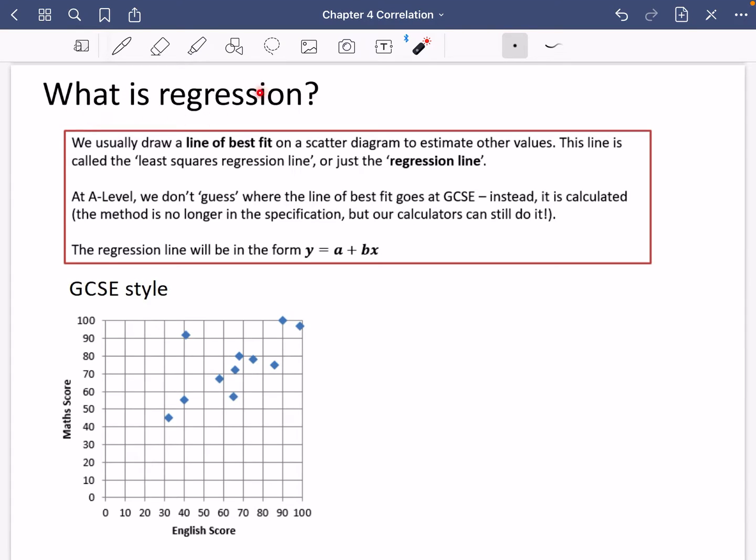The next part of this chapter is talking about something called regression. OK, so let's talk about this. Usually we draw a line of best fit on a scatter diagram to estimate other values.